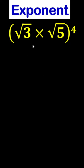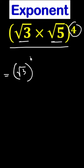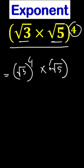Here is root 3 times root 5 to the power 4. We can write this as root 3 to the power 4 times root 5 to the power 4.